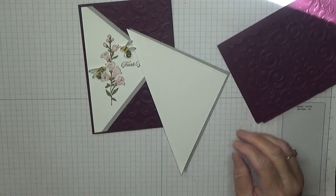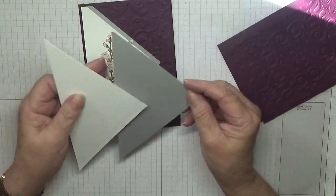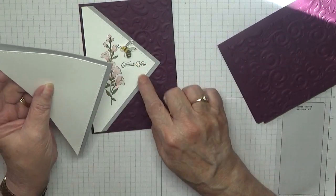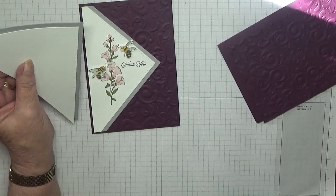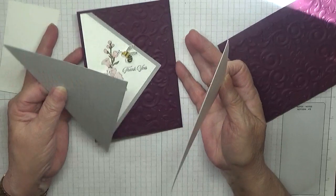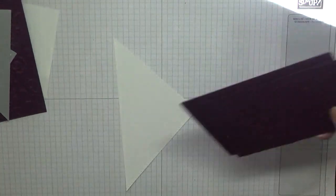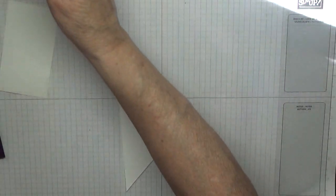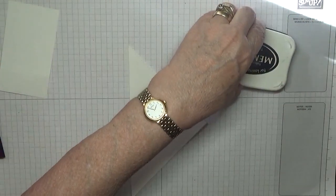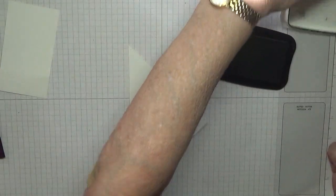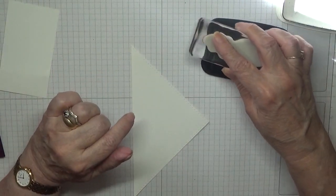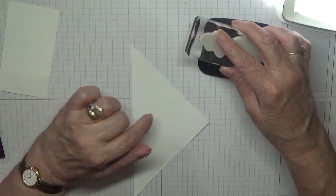You'll need a scrap of white for the bees, which I've got here. So let's do our stamping first. We're going to stamp the flower on here.